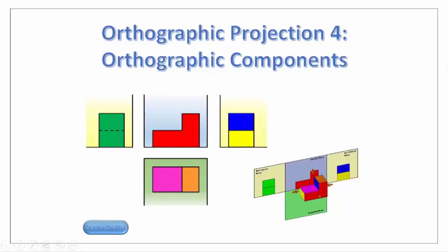Hello and welcome to the fourth video in our webcast series on the topic of orthographic projection. In our previous videos we were looking at how we were able to get our various orthographic views by projecting the surface of an object onto a plane of reference, and in our last video we were looking at how to connect each of those views together. In this video we're going to look at our various planes and how they're represented onto our sheet of paper.